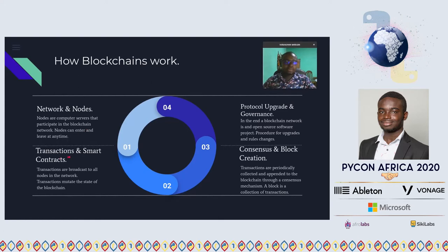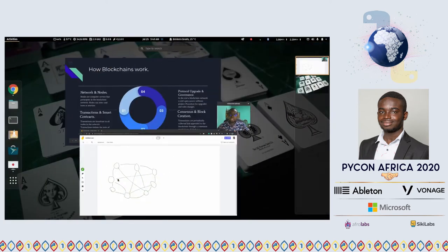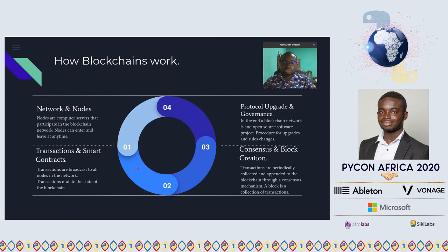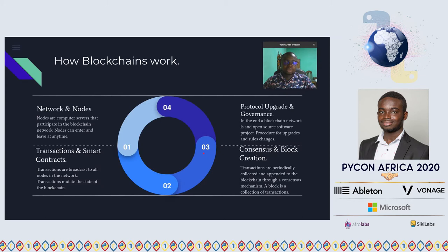The next component is transactions and smart contracts. Transactions are broadcast to all nodes in the network. At a very basic level, a simple transaction is: I want to send this amount of Bitcoin from my address to that address. But a transaction could also be as complex as a smart contract — in fact, a transaction can contain anything.